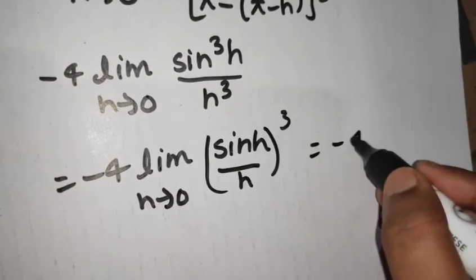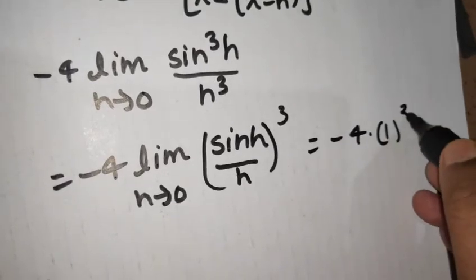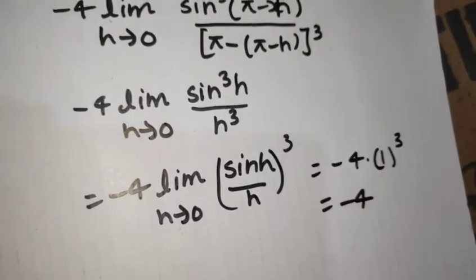So this will simply be equal to minus 4 times 1 cube which is going to give you minus 4.